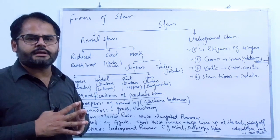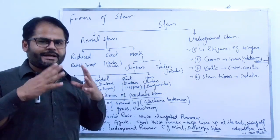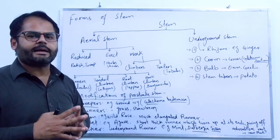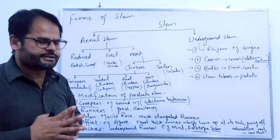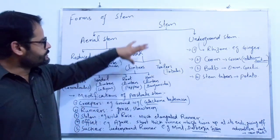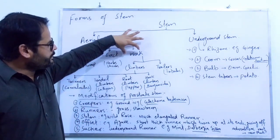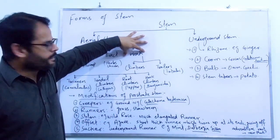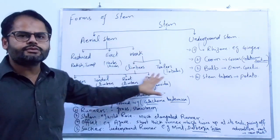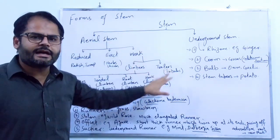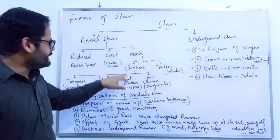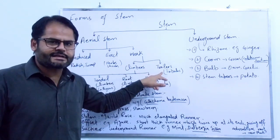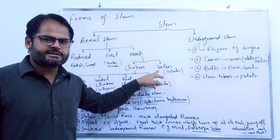The third category is called weak stem. Weak stems cannot support themselves independently; they have certain structures by which they stick to certain surfaces and grow upon those surfaces in order to expose themselves to maximum light and other climatic conditions. Weak stems are divided into two main types: climbers and trailers.